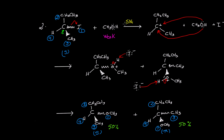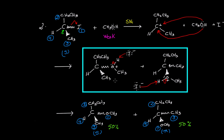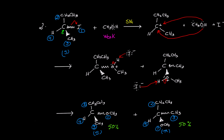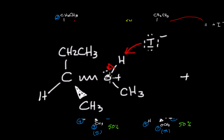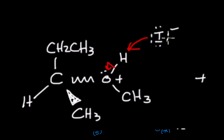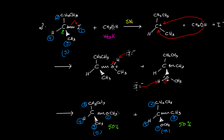Here you can see the major difference: an SN2 mechanism gives only one product resulting from inversion of configuration, however SN1 leads to two products — what we call a racemization mixture. A very important note that students often forget: the first attack leads to a positive charge on oxygen, and then in a second step the base — here the I⁻ — takes this hydrogen to form the neutral OCH₃.